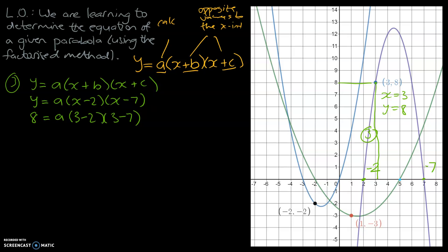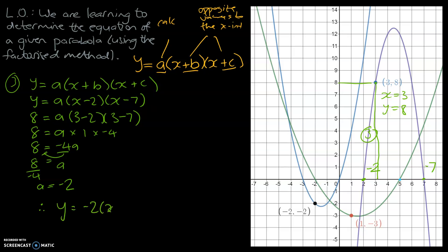Substituting both values: 8 equals a times (3 minus 2) times (3 minus 7). Simplifying the brackets: 3 minus 2 is 1, and 3 minus 7 is negative 4. So 8 equals negative 4a. Moving negative 4 to the other side: a equals 8 divided by negative 4, which gives us negative 2. Just like we thought, we got a negative answer because our parabola is upside down. Therefore, y equals negative 2 times (x minus 2)(x minus 7).